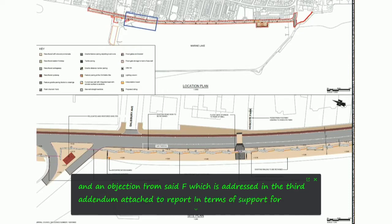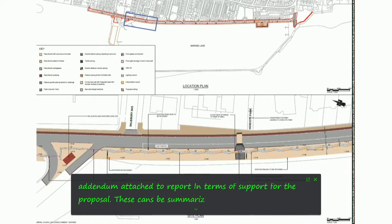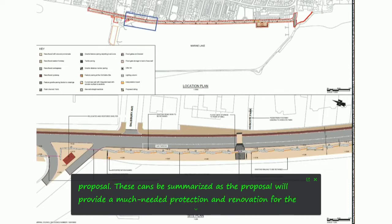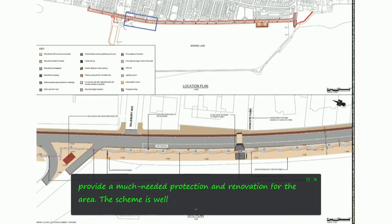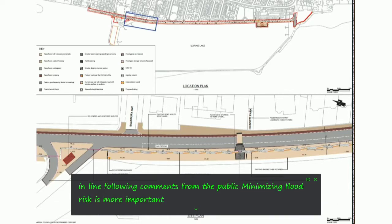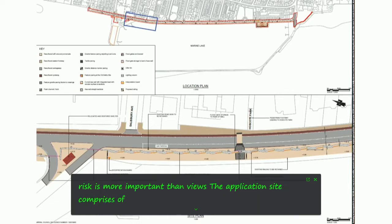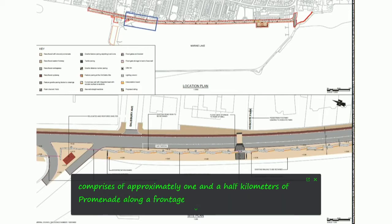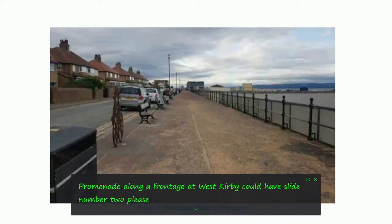In terms of support for the proposal, these can be summarised as: the proposal will provide much-needed protection and renovation for the area; the scheme is well thought out and has been amended following comments from the public; and minimising flood risk is more important than views. The application site comprises approximately one and a half kilometres of promenade along the frontage at West Kirby. The site can be divided into three distinct areas.